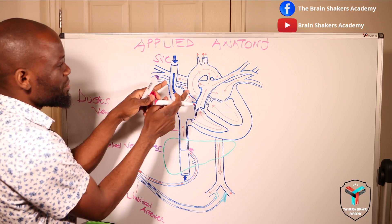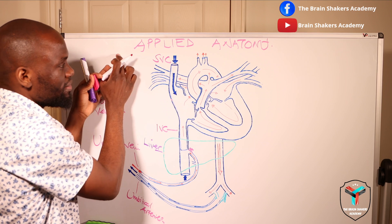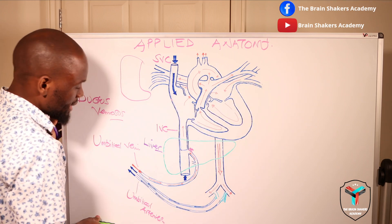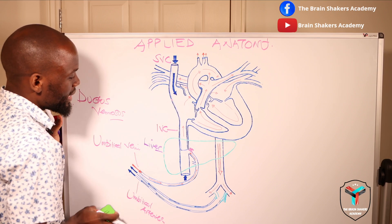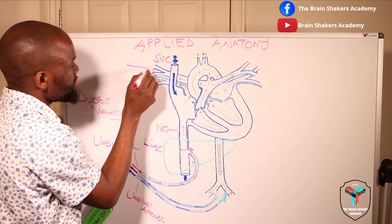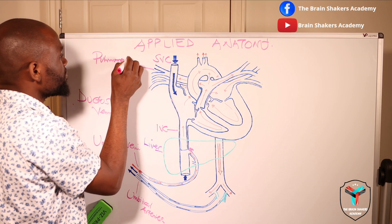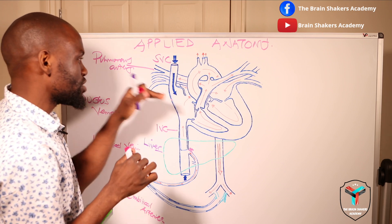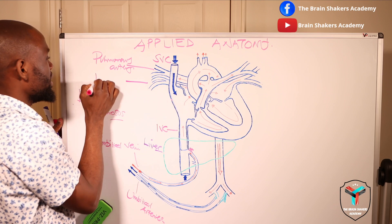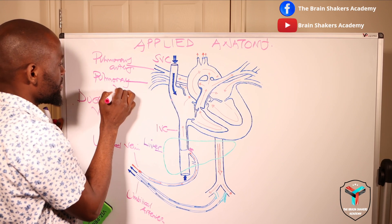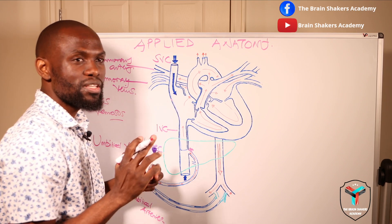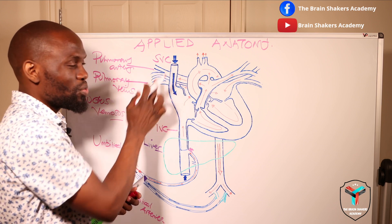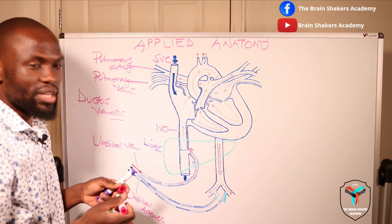Blood coming from the heart goes to the lungs — you have a lung on each side. Blood reaches the lungs from the heart through the pulmonary artery, and returns to the heart through the pulmonary veins. It's important to note that during fetal life the lungs are not functional, so when we come to look at the fetal circulation we'll understand what happens with these major vessels and the role they play.